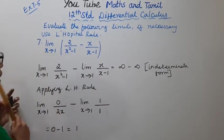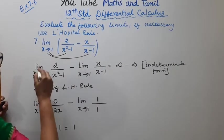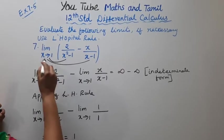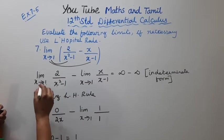Now, we separate the limit. Limit x tends to 1, 2 by x square minus 1, minus limit x tends to 1, x by x minus 1.